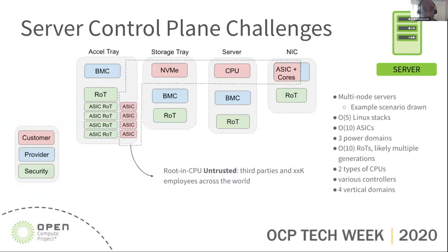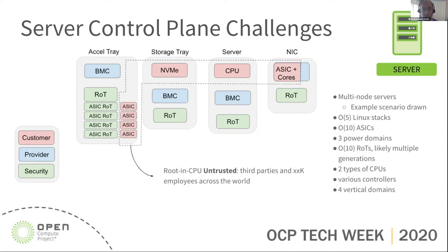So those three things — this is what it looks like for us. A run-of-the-mill server that you're going to find has multiple trays or chassis, different power domains, multiple CPUs, five Linux stacks easily, different ISAs, multiple generations of silicon root of trust. We view it as there are resources 100% devoted to the customer, but we need to hard-isolate those from our ability to manage the infrastructure and to secure it — making sure we can build a trust story on any mutable code that runs on it. This is the scope of the challenge, which is multi-dimensional.